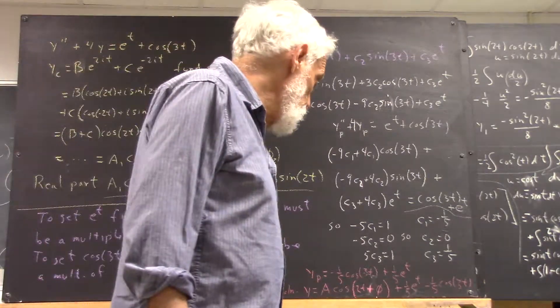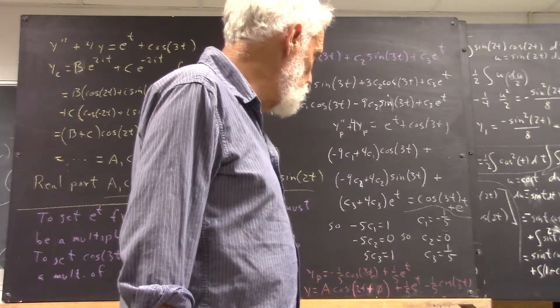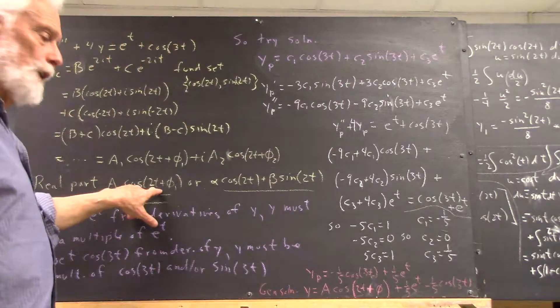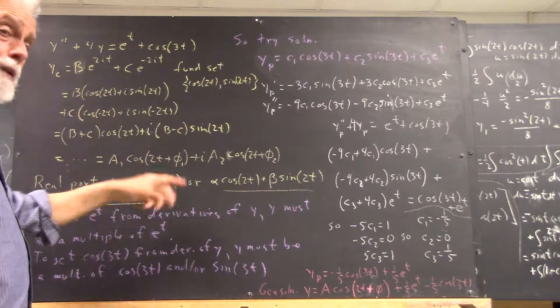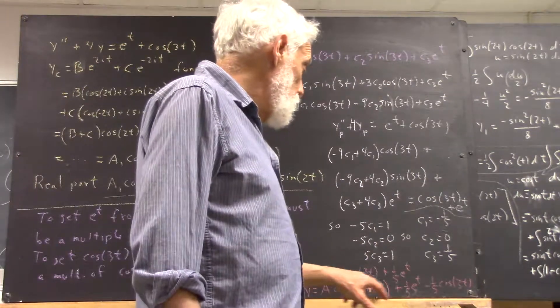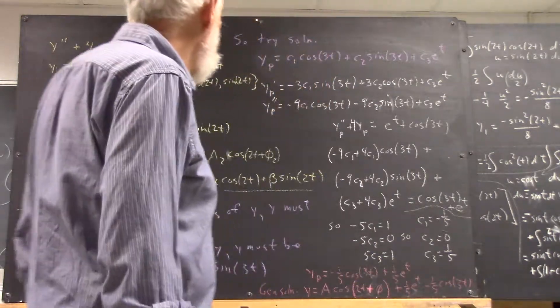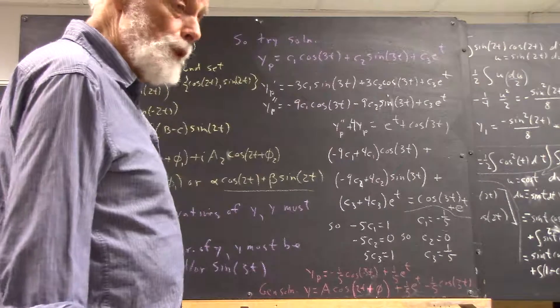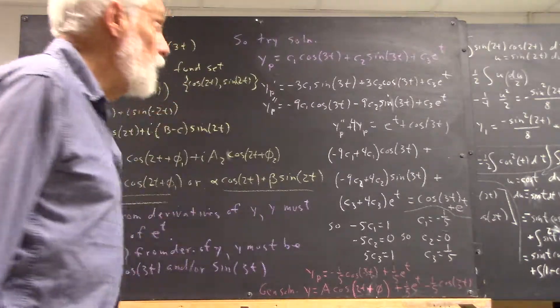Our general solution to the equation then is A cosine of 2t plus 5, this thing. I dropped the subscript because I didn't need it anymore, plus that particular solution. And there's the solution, the general solution to this equation.